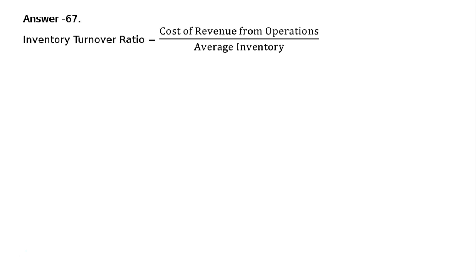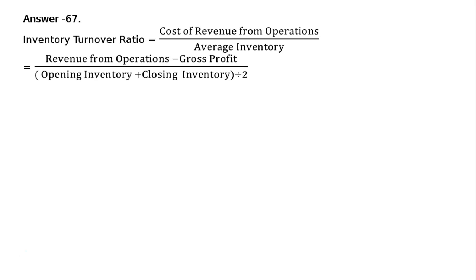Inventory turnover ratio is equal to cost of revenue from operations upon average inventory. That is revenue from operations minus gross profit. According to the question, out of the sales or revenue from operations, if we deduct gross profit, we get cost of revenue from operations. And average inventory is opening inventory plus closing inventory, whole divided by 2.